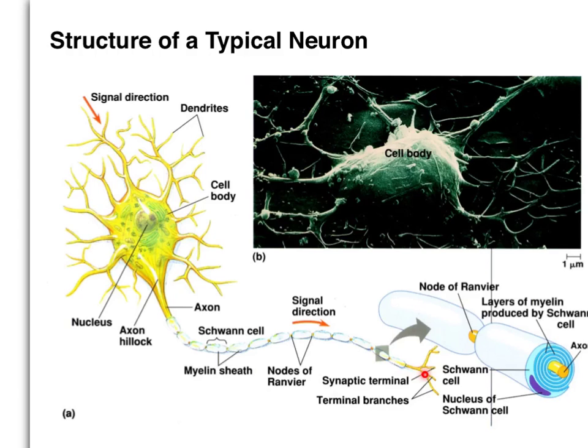Later on, we'll focus more on the myelin sheath or the myelination of some neurons. Keep in mind that not all neurons have myelin, but in general, what myelin is responsible for is increasing the rate of transmission of the signal from one end of the neuron to the other, especially along the length of the axon.